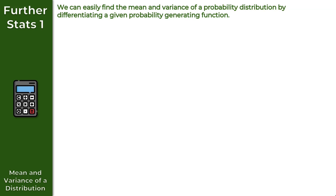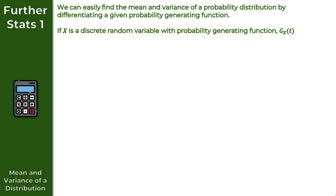In this video, we want to take a look at the mean and variance of a distribution. We can easily find the mean and variance of a probability distribution by differentiating a given probability generating function. If x is a discrete random variable with probability generating function g of x in terms of t, then the mean, which is the same as the expectation of x, is equal to g prime of x when t equals 1.